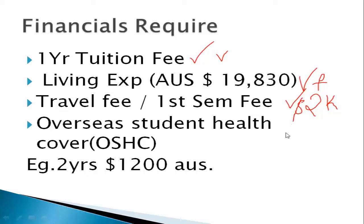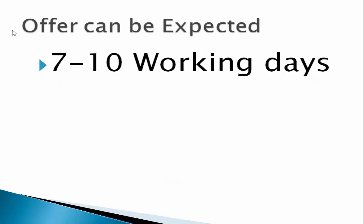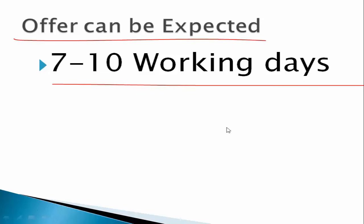There is also overseas health cover, which varies. For example, for two years it is around 1,200 Australian dollars — this is an example and not an exact value. It is for a single person; if it is for a couple it will differ.